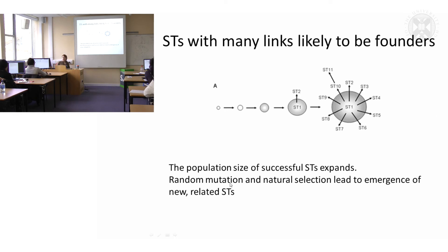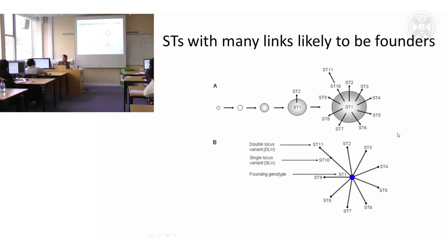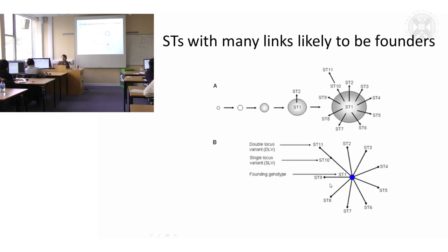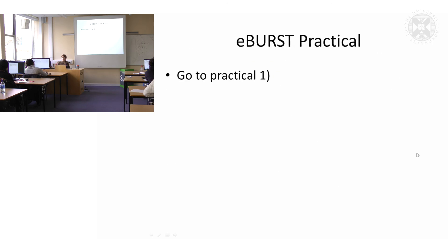The mutations you see in the allelic variants dictate what these sequence types are. You've got your founding genotype and then single locus variants, and if there are two differences — like this one from this one — that would be a double locus variant. If you go to your practical notebook now that you've downloaded, we can have a go at the first practical and see how you get on.